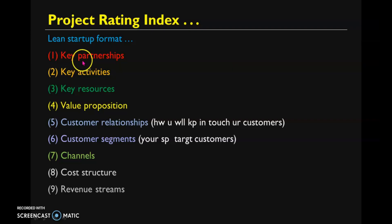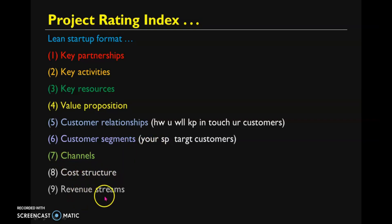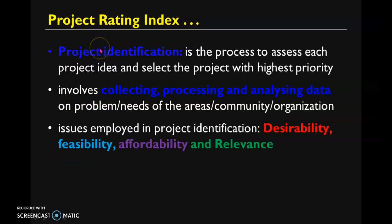The lean startup format contains different important features — I will put the details in the description below. Key features include: key partnerships, key activities, key resources, value proposition, customer relationships, customer segments (your specific target customers), channels, cost structure, and revenue streams. You have to consider and identify all of these.